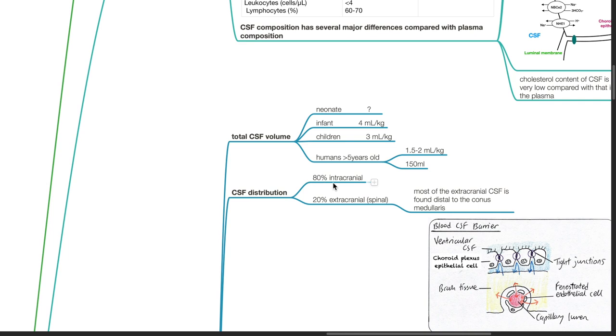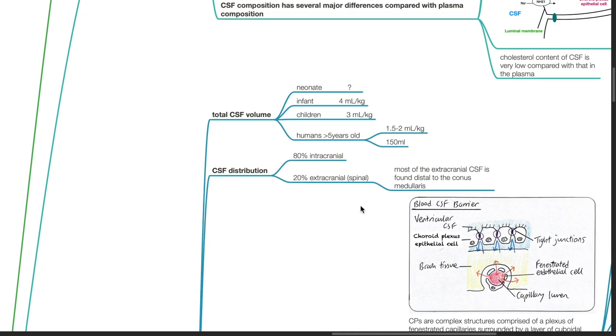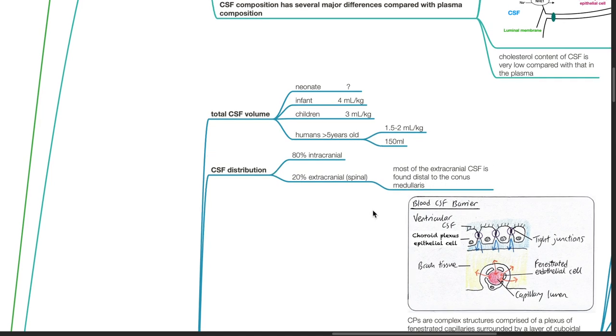CSF distribution: 80% is intracranial, 20% is extracranial. Most of the extracranial CSF is found distal to the conus medullaris.